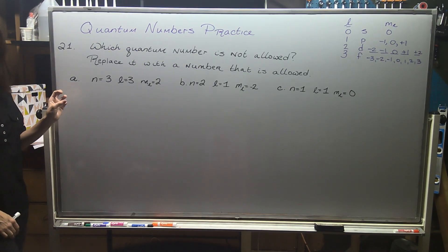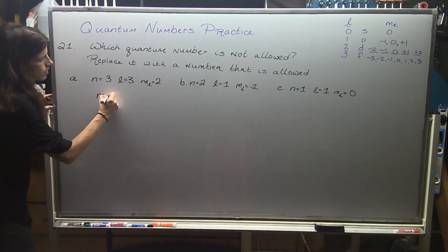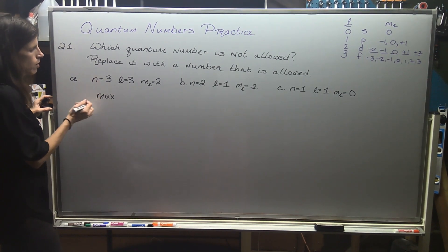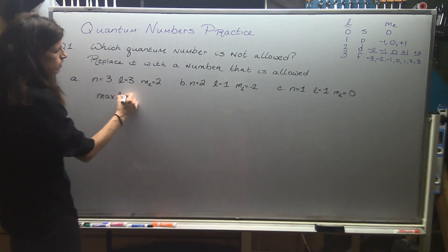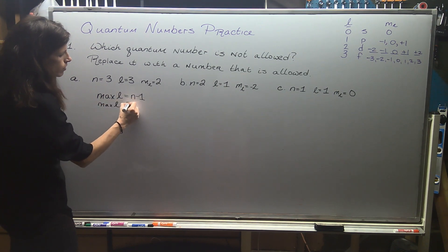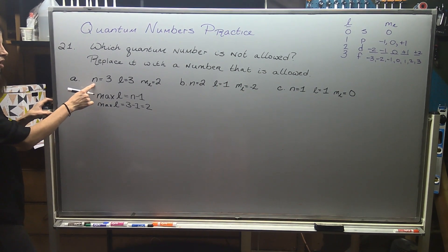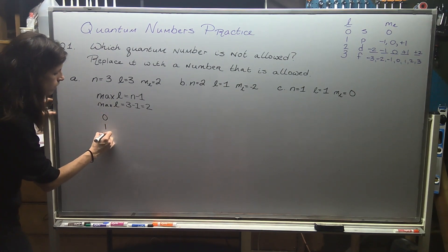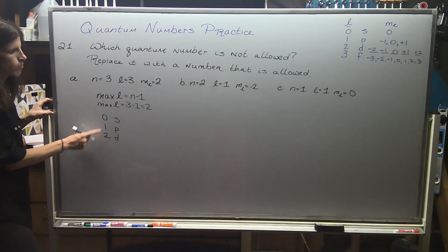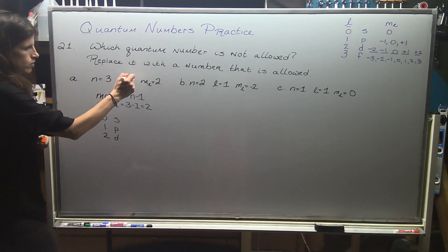When doing this kind of analysis, I always start with my principal quantum number and use max l equals n minus 1. So max l is 3 minus 1 which equals 2, meaning under principal quantum number 3 I can have l = 0, 1, or 2, corresponding to s, p, and d. Any of these three numbers would be acceptable, but they took it too far and put l equals 3, so that's a problem.